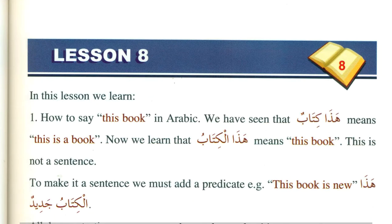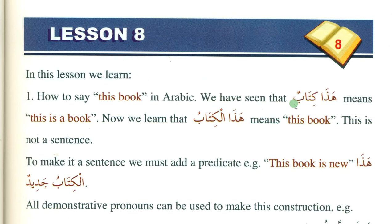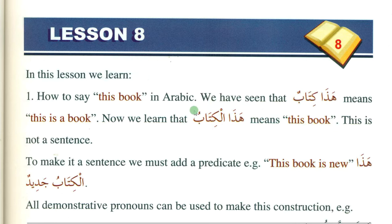Today we are going to start lesson number eight of Madinah. Previously you have learned that kitabun means 'a book' and it is a complete sentence. Alkitabu means 'the book' — the tanween makes it 'a', giving a complete sentence. When we say haza alkitab, meaning 'this the book', it is not a complete sentence.